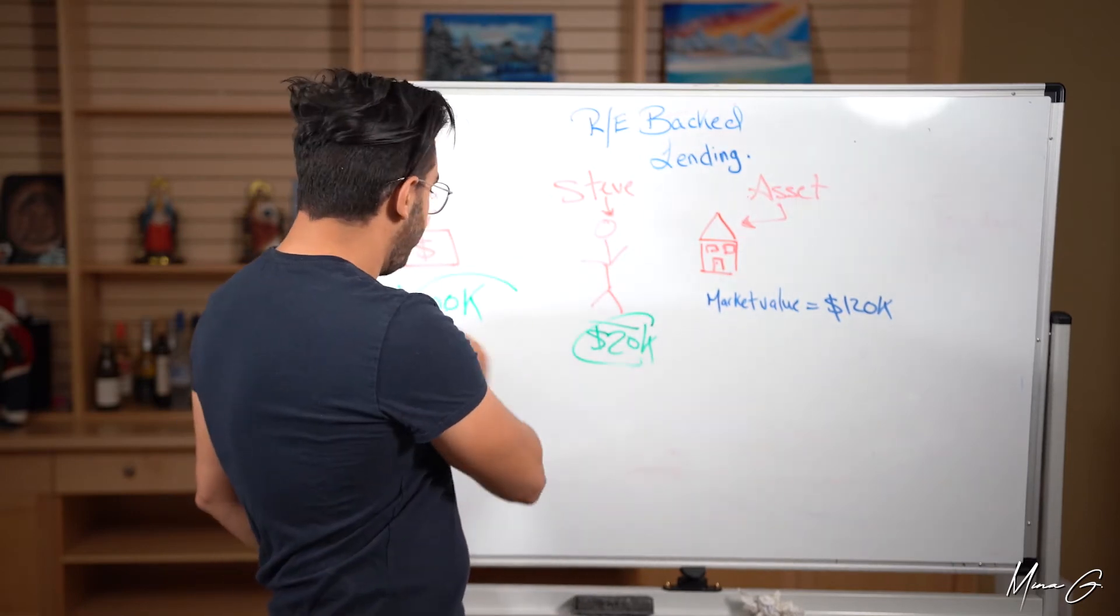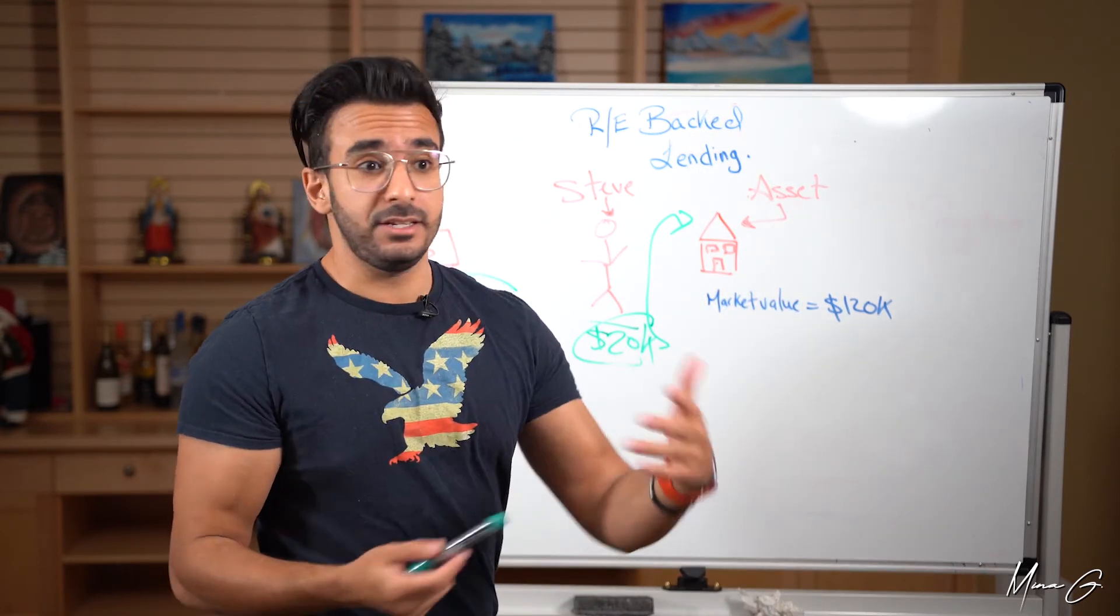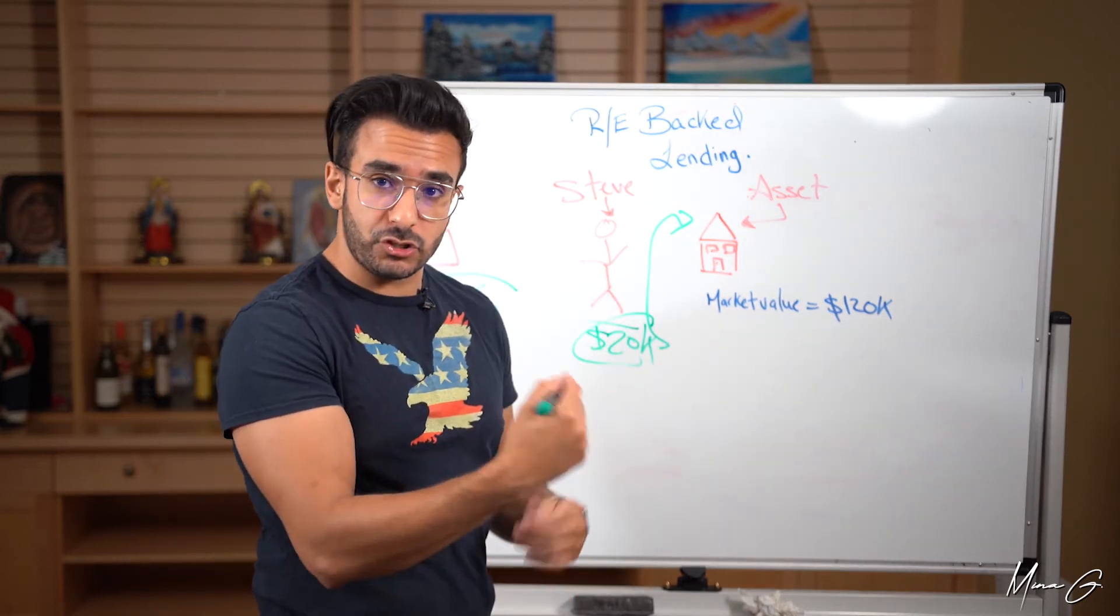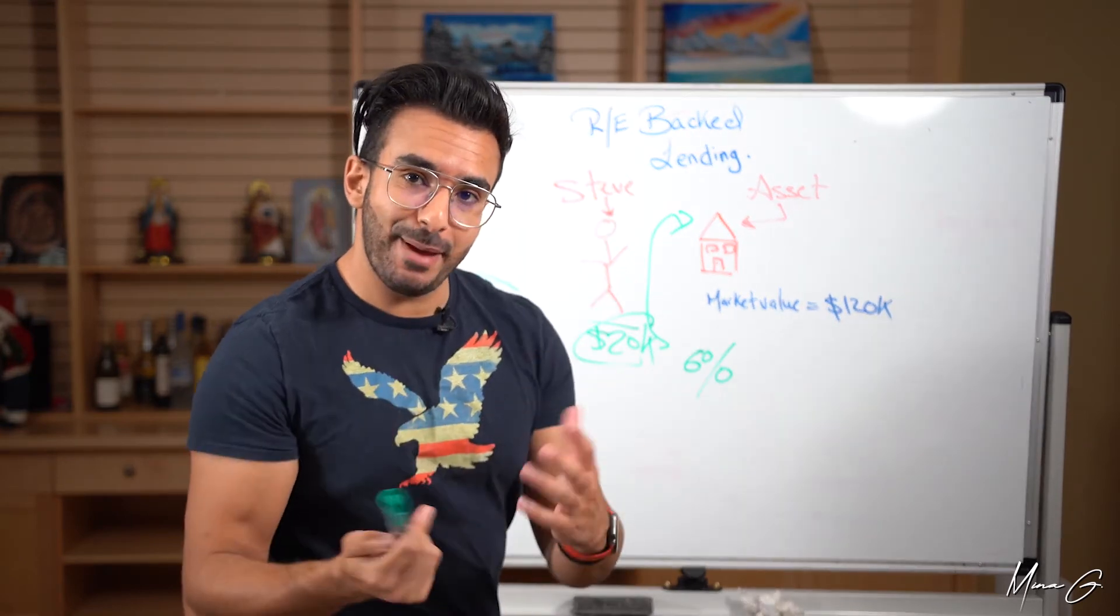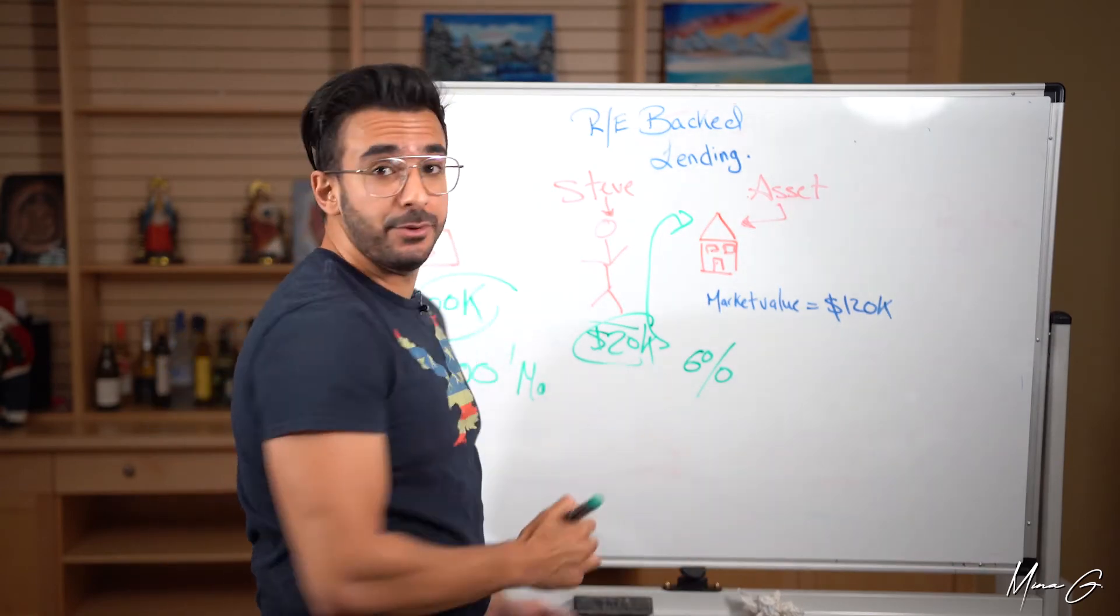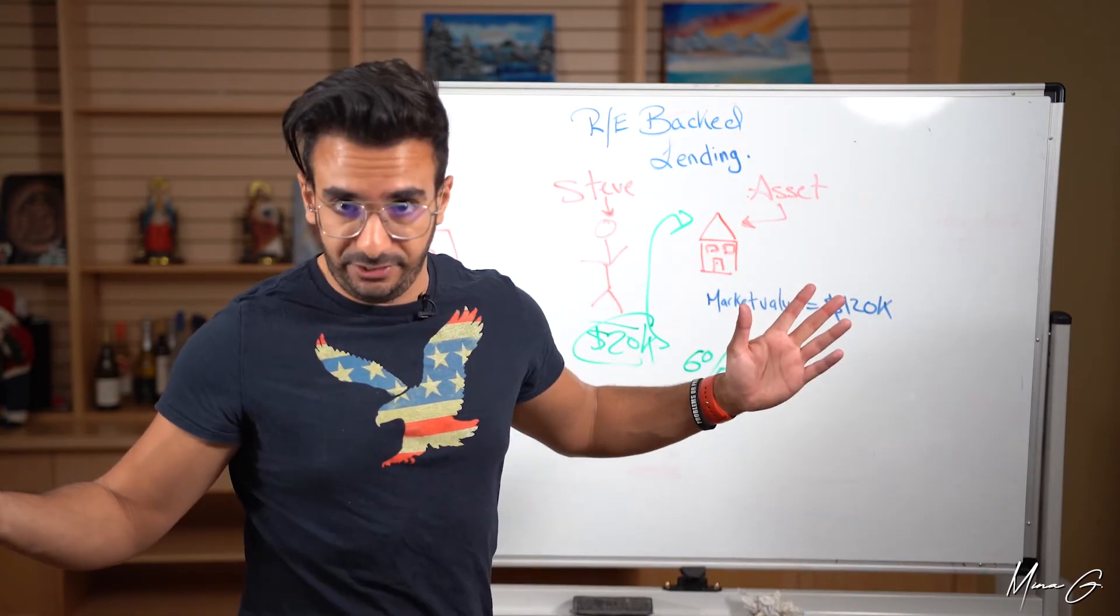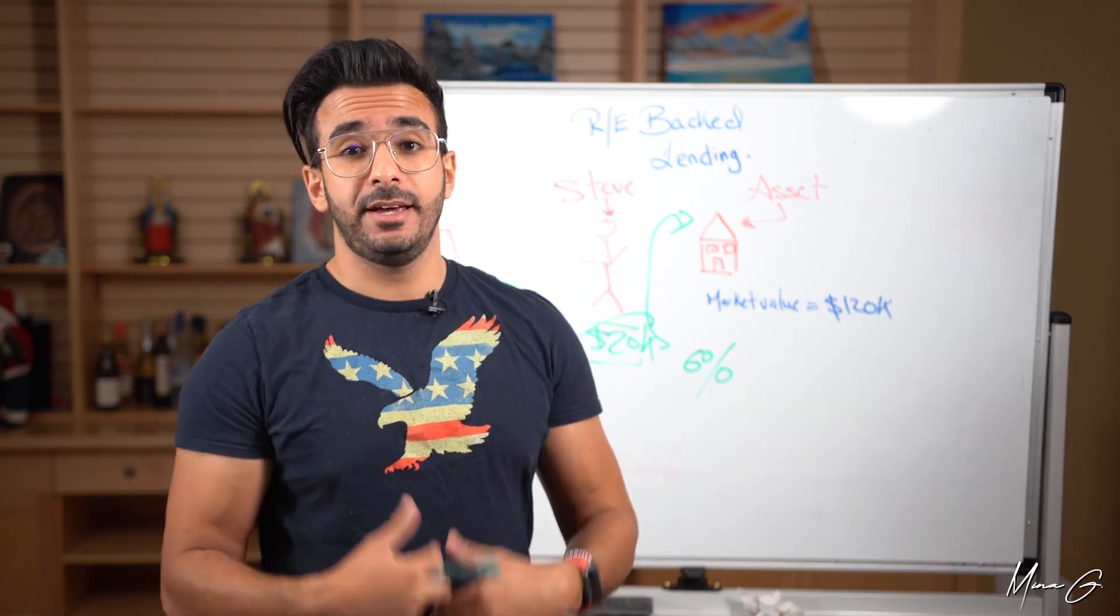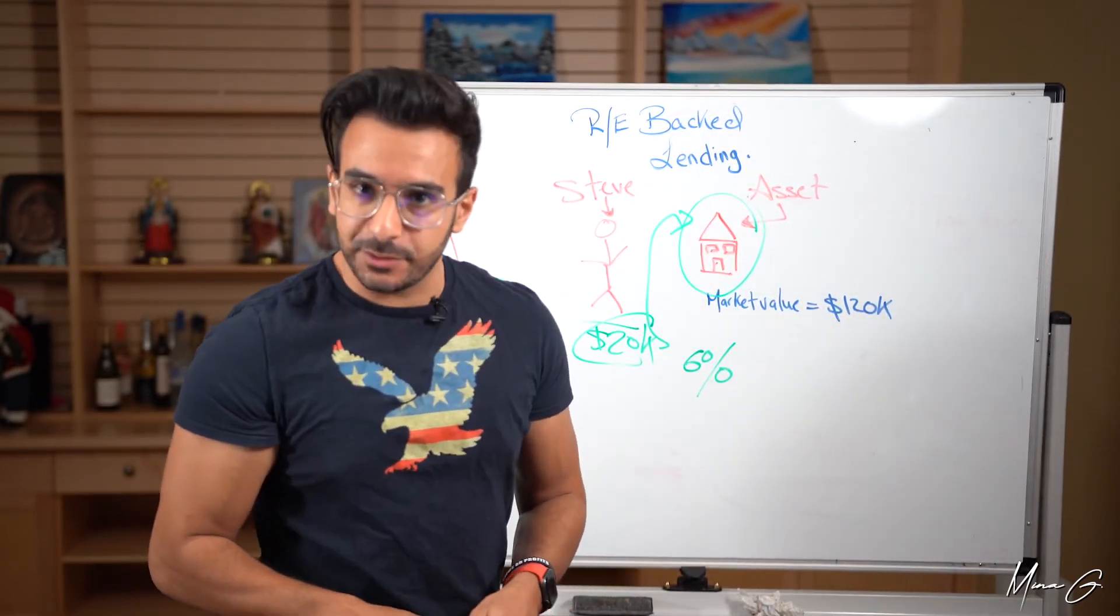Now Steve takes this money and he goes and buys this house. Steve now has an asset worth $120,000 and he's renting it or living it or whatever Steve's doing, but he promised you to pay you back a certain return because you're giving the money. So let's say that return is 6%. So Steve now has to pay you roughly $500 a month every month, as long as he has that hundred thousand. Sounds like a great thing. You're getting 6% return on your money. Steve's getting a house. Everybody's happy. And the beauty of real estate lending and why generally speaking, it's considered a safer type of investment is because there's always an asset right here that is backed by it.